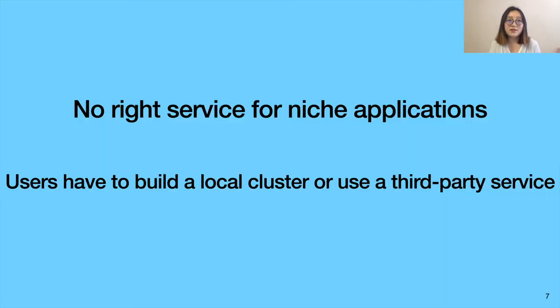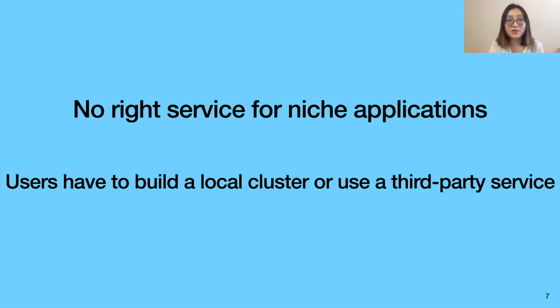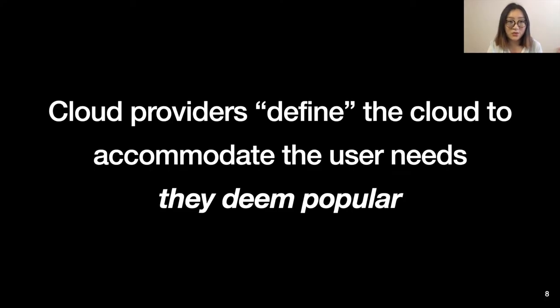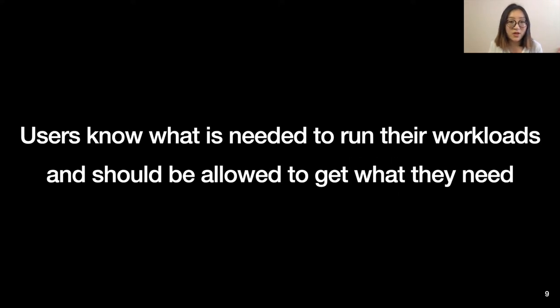What this example tells us is that with today's cloud computing model, there often is no right service for niche applications. As a result, users have to build local clusters or use third-party services. The root cause behind this is a disconnection between cloud providers and cloud users. Cloud providers define the cloud to accommodate the user needs they deem popular, but users are the ones who know what is needed to run their workloads, and we should let users get what they need.